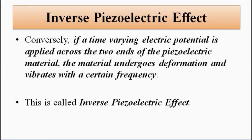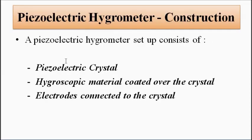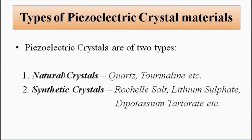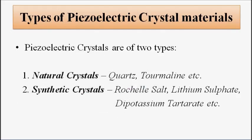Let us see how this property is utilized. In piezoelectric hygrometers, the basic setup consists of a piezoelectric crystal. Mainly quartz crystal is used. Piezoelectric materials are of different types: natural crystals and synthetic crystals. Natural ones include quartz and tourmaline, and mainly quartz is used for the design of piezoelectric hygrometers. In synthetic materials we have Rochelle salt, lithium sulfate, and dipotassium tartrate, among others, but quartz is the main piezoelectric material used for hygrometers.